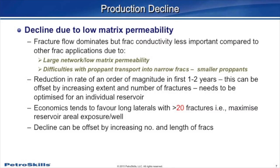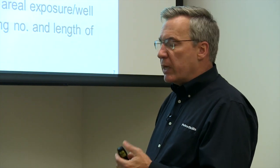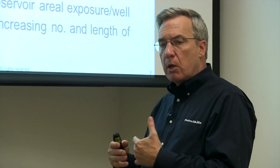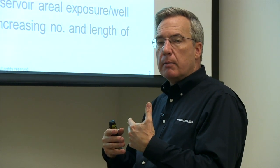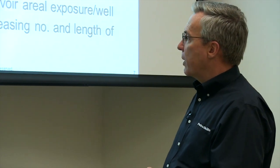The production decline on these wells is very steep — typically we lose 80 to 90 percent of the flow rate in the first year or two, which is extremely steep. The economics tend to favor long laterals with greater than 20 frack stages. We just continue to put more and more frack stages in these wells as we learn and advance our technologies in these shale basins.